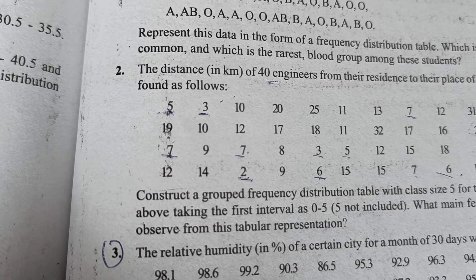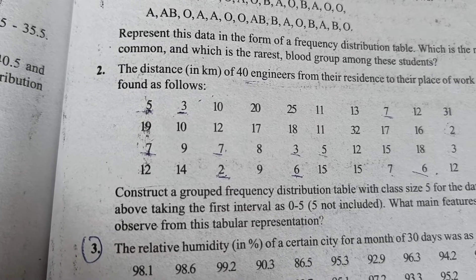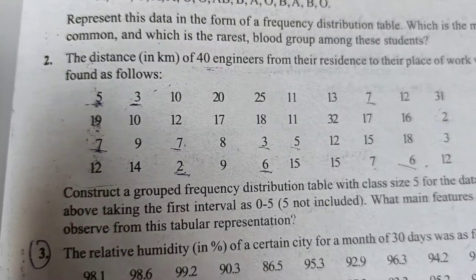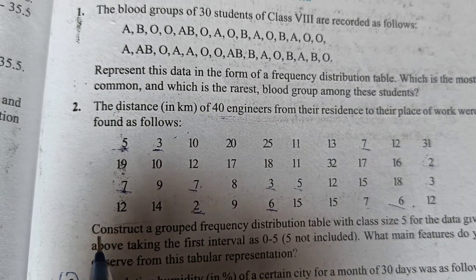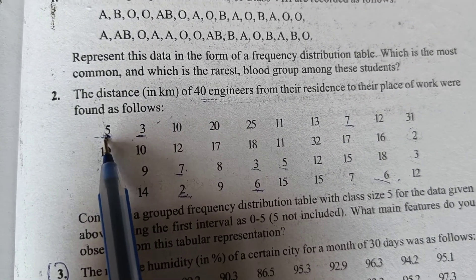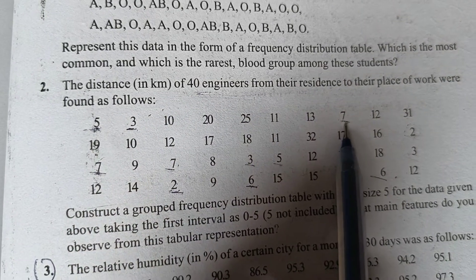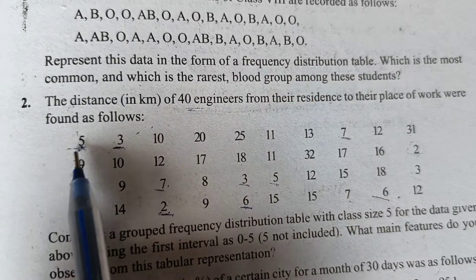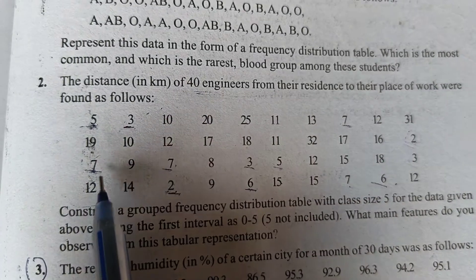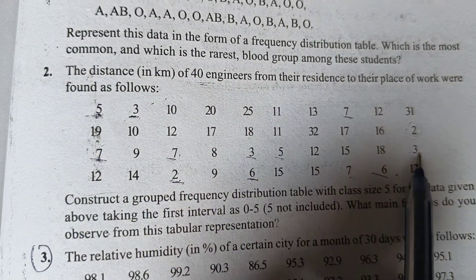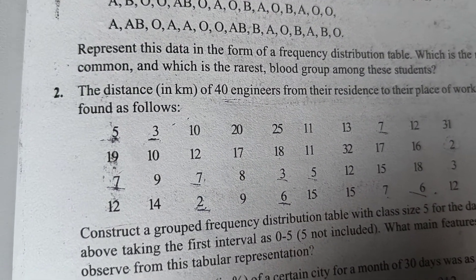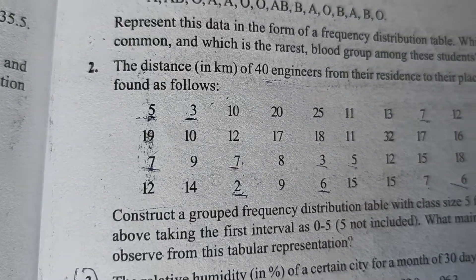We need to find the probability of an engineer living within 7 km, which means less than 7. You do not count values equal to 7. Counting only values less than 7, we get 1, 2, 3, 4, 5, 6, 7, 8, 9 — total 9 engineers. So the probability of an engineer living within 7 km from the place of work will be 9 by 40.